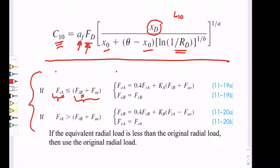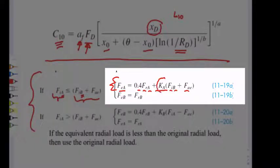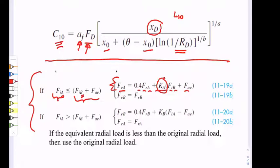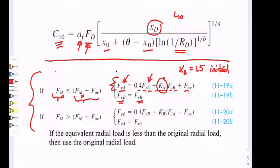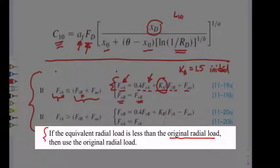When the induced axial load at A is less than the sum of induced at B plus the external axial load, update the equivalent radial load at A using the equation with K_A — which you obtain by selecting bearing A. We always start with K_A = 1.5 as an initial guess, then go back and update it. For the bearing not additionally loaded by the external axial load, leave its equivalent radial load equal to the actual applied radial load. Importantly, if the computed equivalent load is less than the applied radial load, use the applied radial load instead.